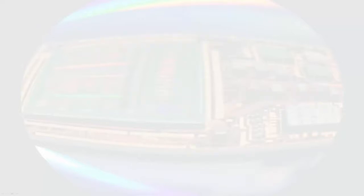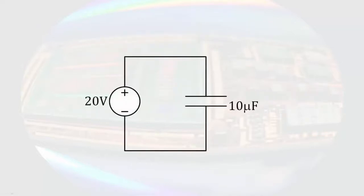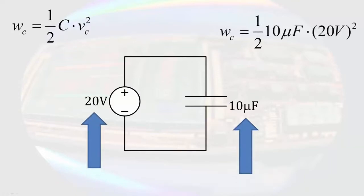If we had a 20 volt DC source attached to a 10 microfarad capacitor, we can use this equation to determine the energy stored in the capacitor. We simply substitute the capacitance and the voltage into the equation. Then the energy stored would be one half times 10 microfarads times 20 volts squared, which gives us 2 millijoules.